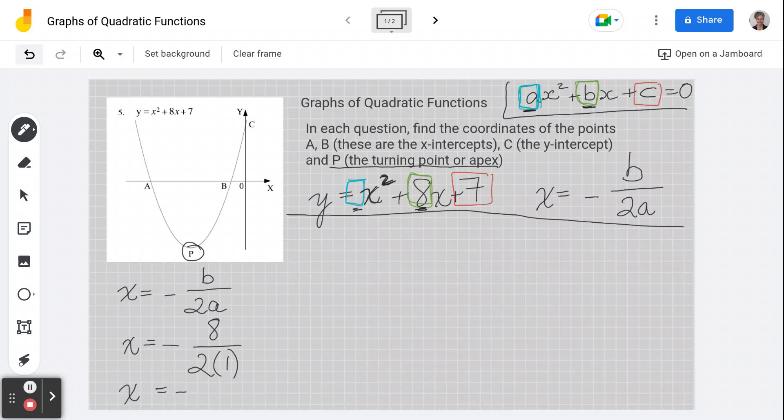So now I do, what is this equal? Negative 8 over 2. Well, 2 goes into 2 once. 2 goes into this 4 times. So I have, don't forget your negative sign, negative 4, because 4 over 1 is 4. So now I know my x value. My x value is going to be negative 4.